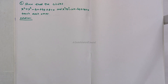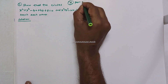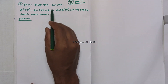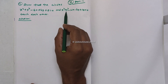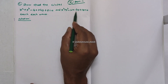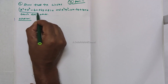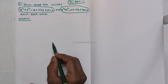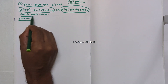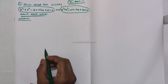Hello everyone, welcome to this class. Let's talk about an important part — we will talk about 7 marks and 8 marks questions. The two circle equations are: x² + y² - 4x + 6y + 8 = 0 and x² + y² - 10x - 6y + 14 = 0. We need to prove that these two circles touch each other.